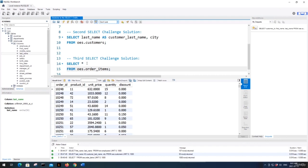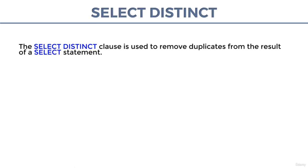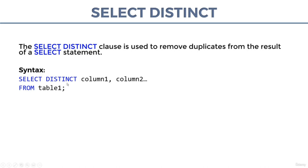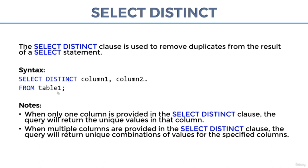Hello everyone and welcome to the SELECT DISTINCT lecture. The SELECT DISTINCT clause is used to remove duplicates from the result of a SELECT statement. The syntax is: SELECT DISTINCT followed by one or more columns, separated by commas, then our FROM clause. When only one column is provided in the SELECT DISTINCT clause, the query returns the unique values in that column. When multiple columns are provided, it returns unique combinations of values for the specified columns.